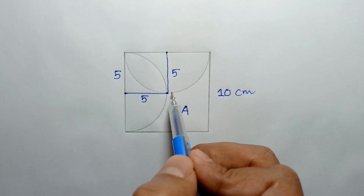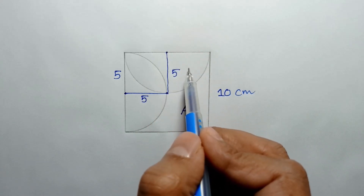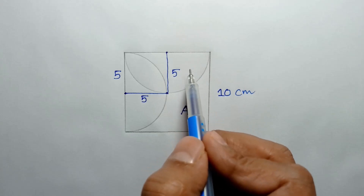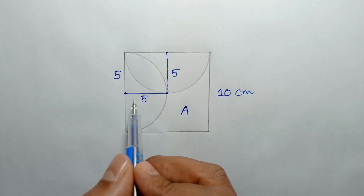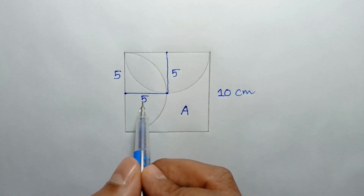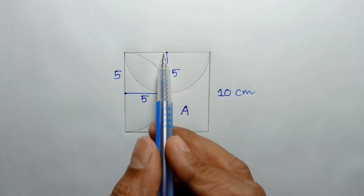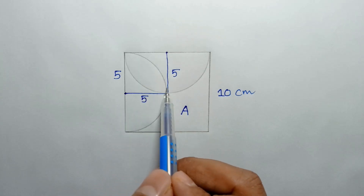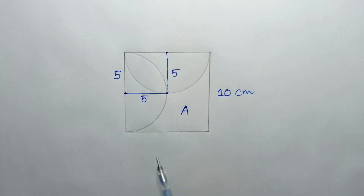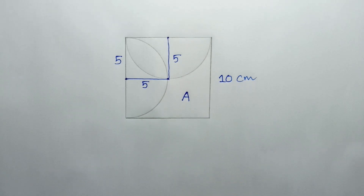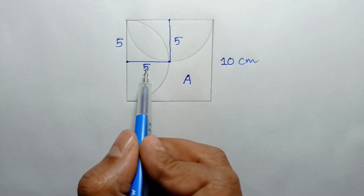And this is a quarter circle of radius 5 centimeters, and this is also a quarter circle of radius 5 centimeters. So the area of this region is the area of this square plus this quarter circle and this quarter circle.